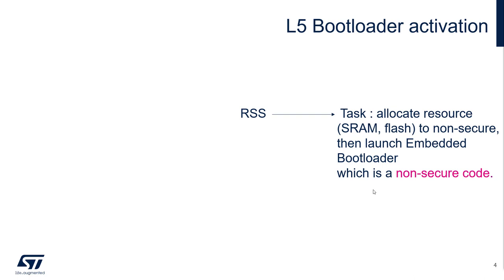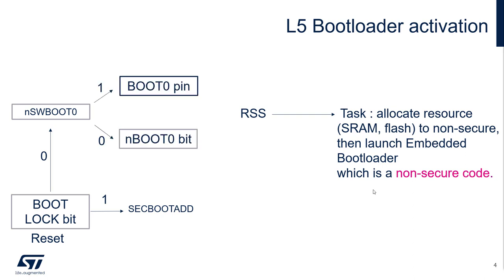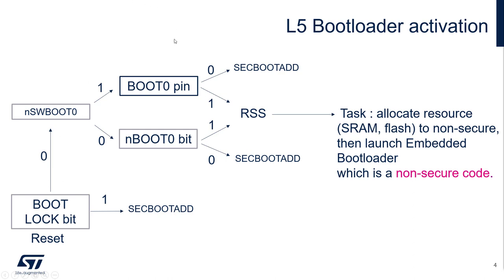How can we activate the Root Security System? The information is in the reference manual, but to summarize: at reset, the system tests the boot lock bit option byte. If this is set to 0, it will test another option byte named NSoftware Boot T0. Depending on the value, it will then test the boot T0 pin or the nboot T0 bit, which is another option byte. Depending on that value, you will boot to the secure boot address in flash, or to the RSS — the Root Security System. So if you ensure this path is available on your target, you can always activate the boot T0 pin to reach the Root Security System, ensuring the core is in non-secure state so you can connect.